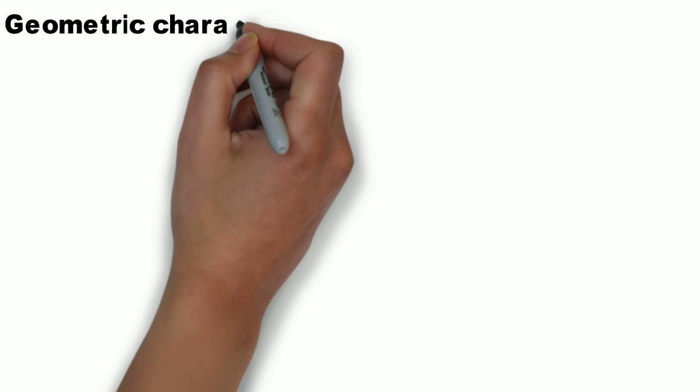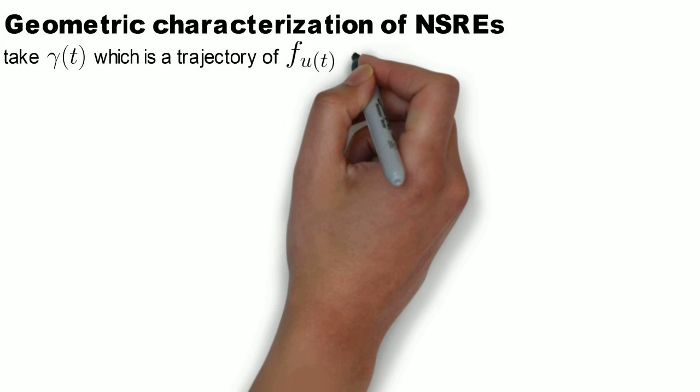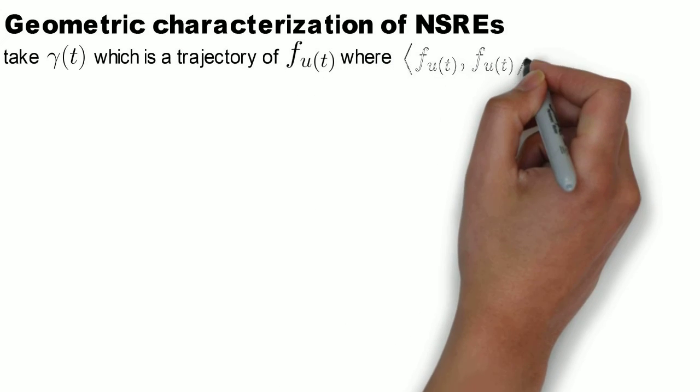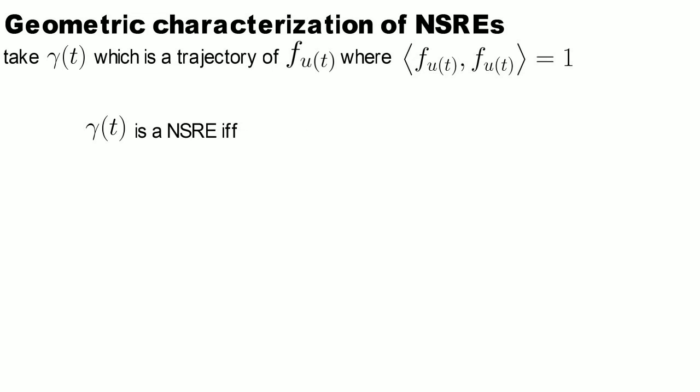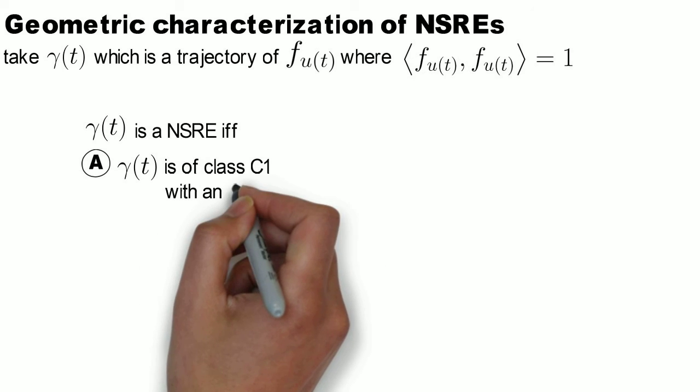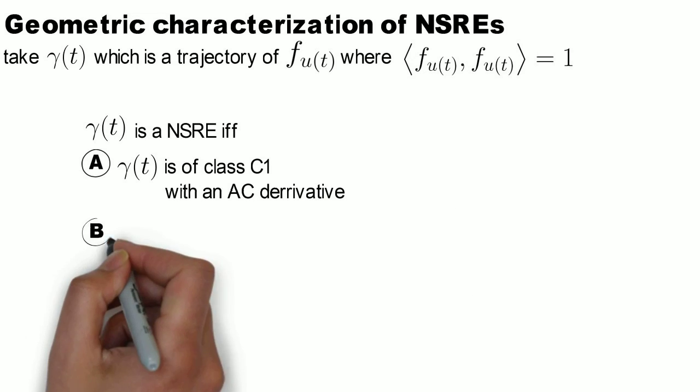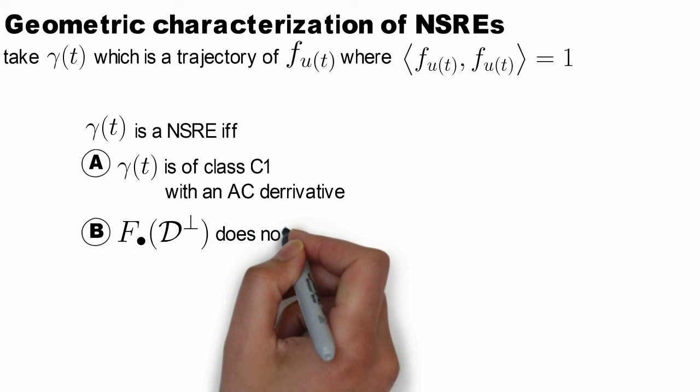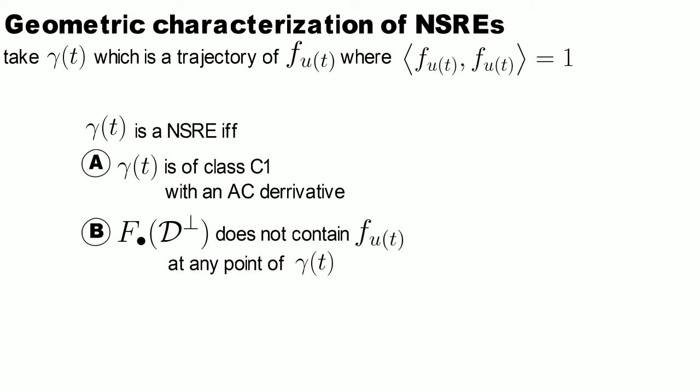Assume now that gamma is the trajectory of time dependent normalized vector field F of U. Then gamma is a normal Subriemannian extremal if and only if it satisfies the following two conditions. First of all, gamma should be of class C1 with absolutely continuous derivative. Secondly, the distribution F dot of D perpendicular described before should not contain the field F of U which is tangent to gamma for any point of gamma.